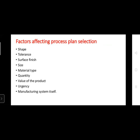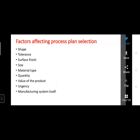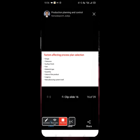The factors affecting process planning selection are: shape, tolerance, surface finish, material type, value of the product, and manufacturing system. These are the different factors that affect process planning. With this, process planning is complete.